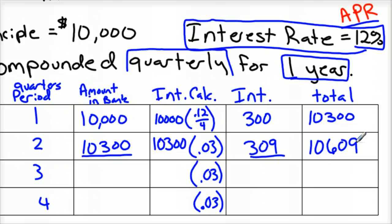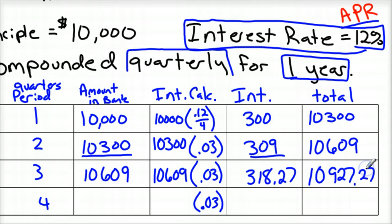So that's what we're going to start the third quarter with, $10,609. And so we're going to take that times 0.03. And so now we have $318. And notice our interest is growing each quarter, because we're not touching the money at all. And we'd have $10,927.27. And rounding to the nearest penny at this point.